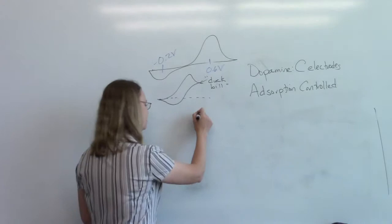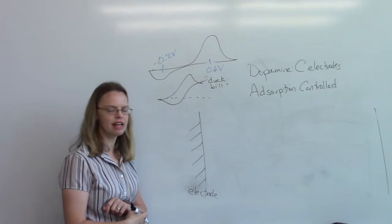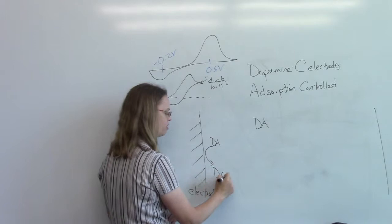And so what does it mean to be adsorption controlled? I like to steal this textbook diagram, where this is the electrode surface. And so when we talk about kinetics, we have dopamine out in solution, and we want to oxidize it.